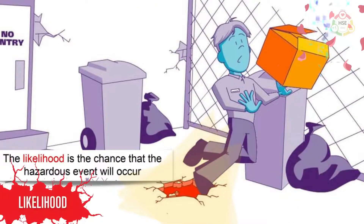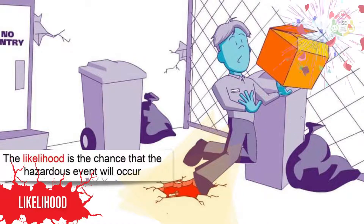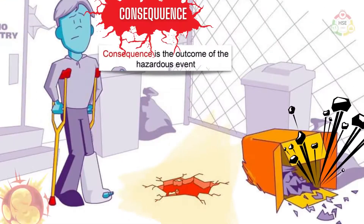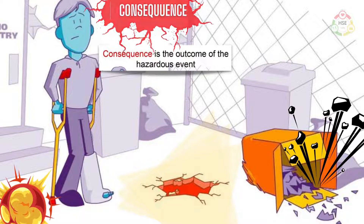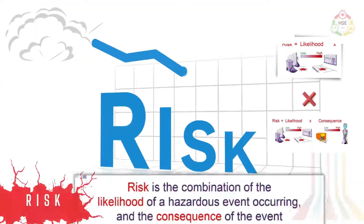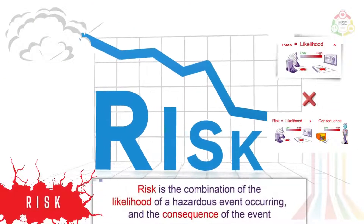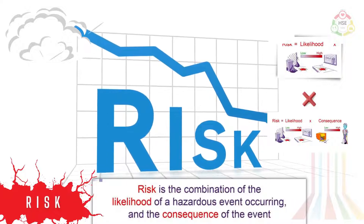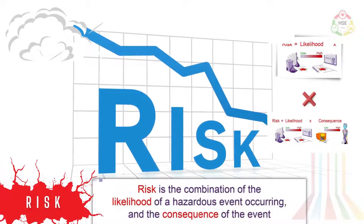The likelihood is the chance that the hazardous event will occur. Consequence is the outcome of the hazardous event. Risk is the combination of the likelihood of a hazardous event occurring and the consequence of the event.